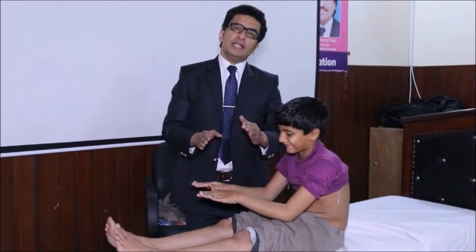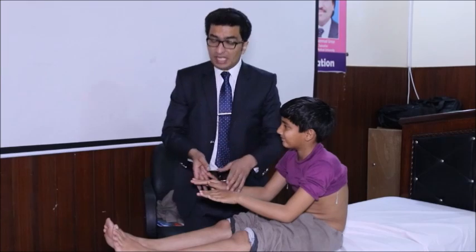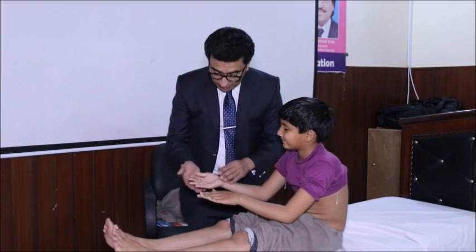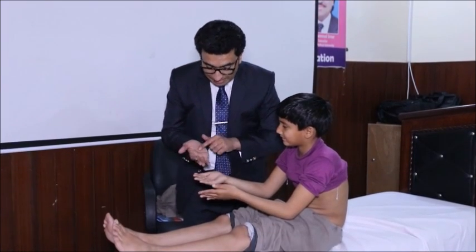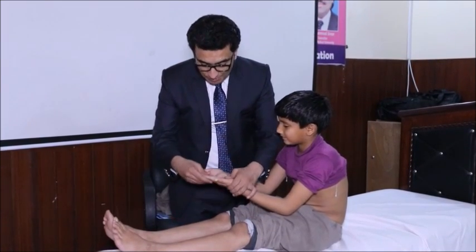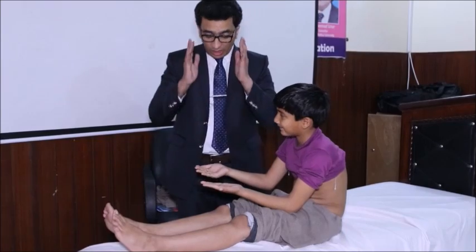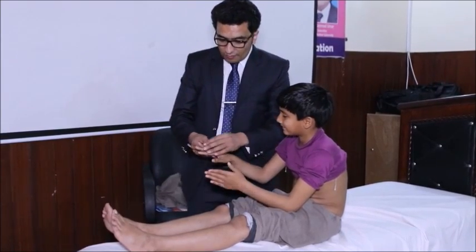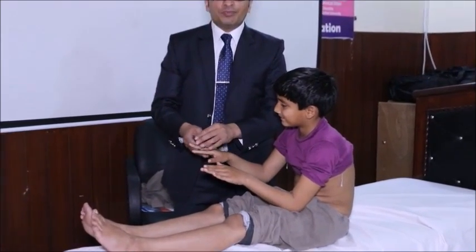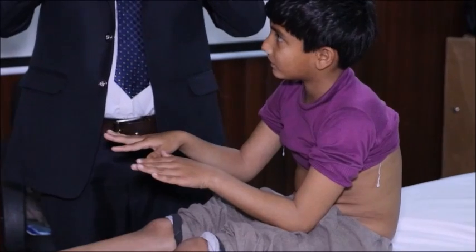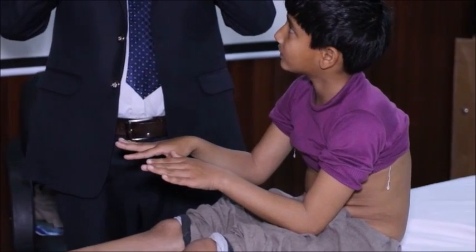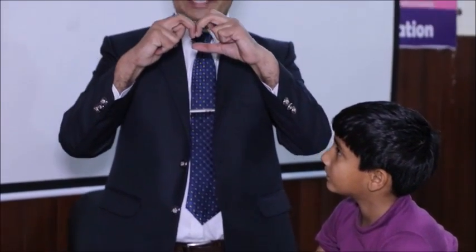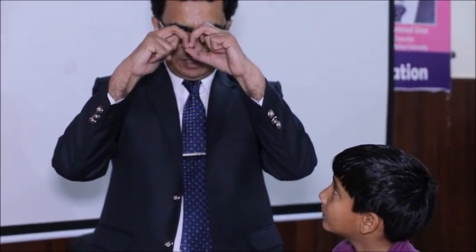Look for the symmetry of the hands. Note if there is any extra digit present. Look for pallor, look for the simian crease, look for short or incurved fingers, and look for clubbing. For clubbing, you can ask the patient to join both fingers together and see whether there is a space in between. Or you can use the card method as well.